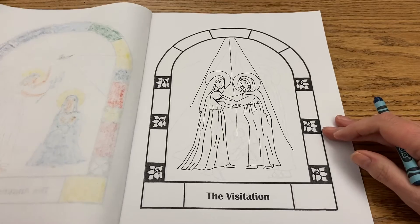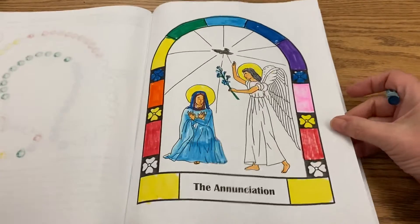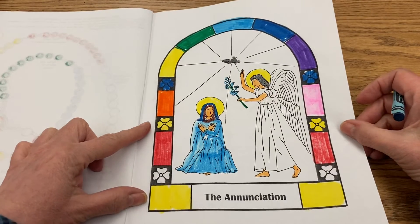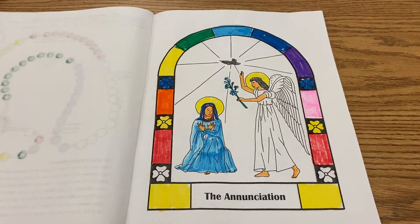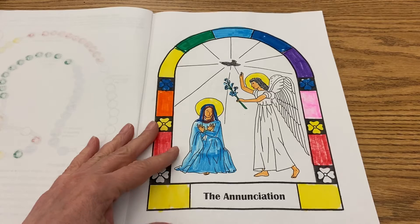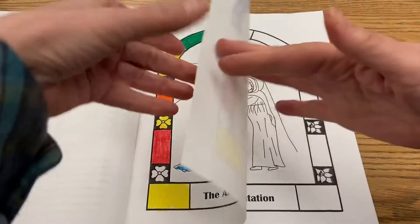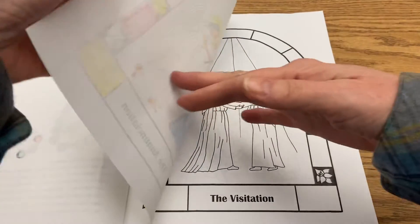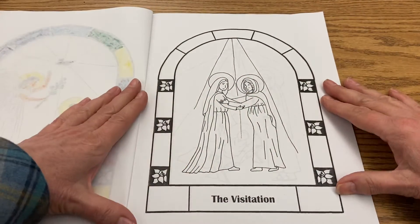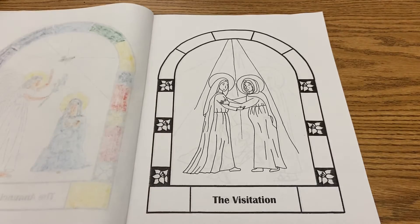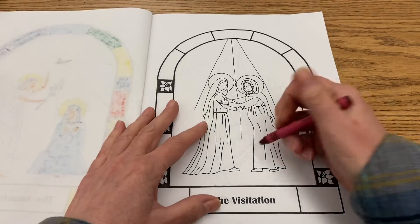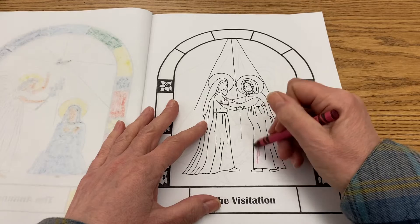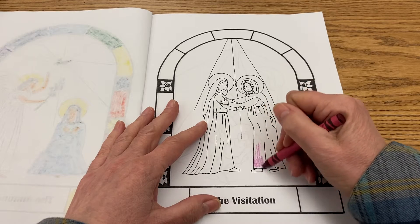I was going to show you how I colored my Annunciation page right there. And so that's that stained-glass window there. So I'm going to go to this one and color it now. I think I'm going to do her cousin Elizabeth in maybe a reddish colored dress.